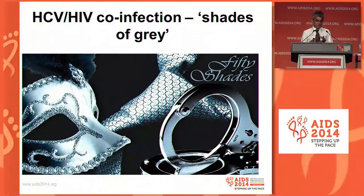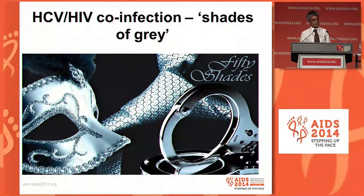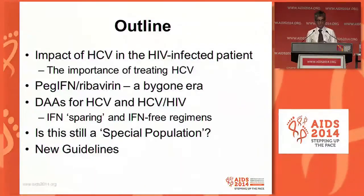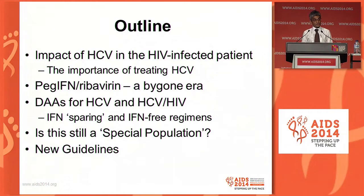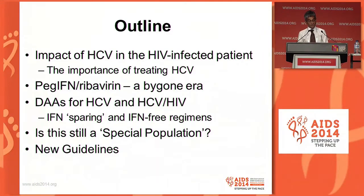There are numerous shades of grey in terms of the immunopathology, the epidemiology, and the transmission of hepatitis C amongst HIV positive gay men, which we won't discuss today. What I thought we should do today is look at the impact of HCV in the HIV infected patient, talk about the bygone era of pegylated interferon and ribavirin, look at some of the data in terms of DAAs coming up for co-infection — both interferon-sparing and interferon-free regimens — and ask whether this is still a special population and what the new guidelines look like.